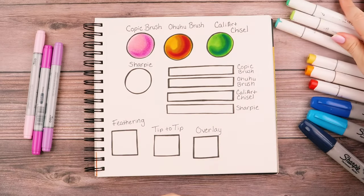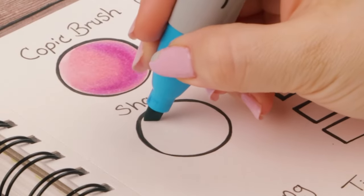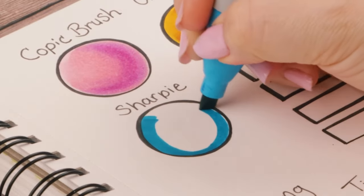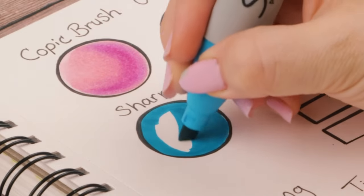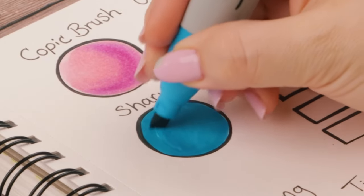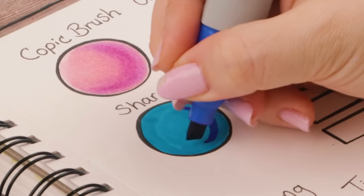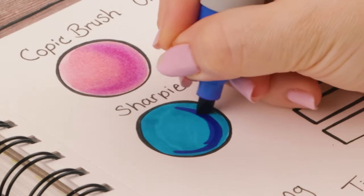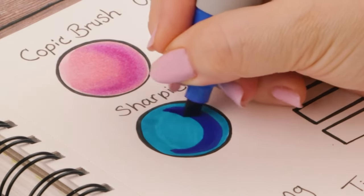And now Sharpie. These are actually my hardest markers to blend with, but it's not impossible. They're also chisel nibs. I go ahead and lay down this blue color that's going to be my base. Then this darker blue, which is very, very dark. So the blend might not be as good, but I guess we will find out.